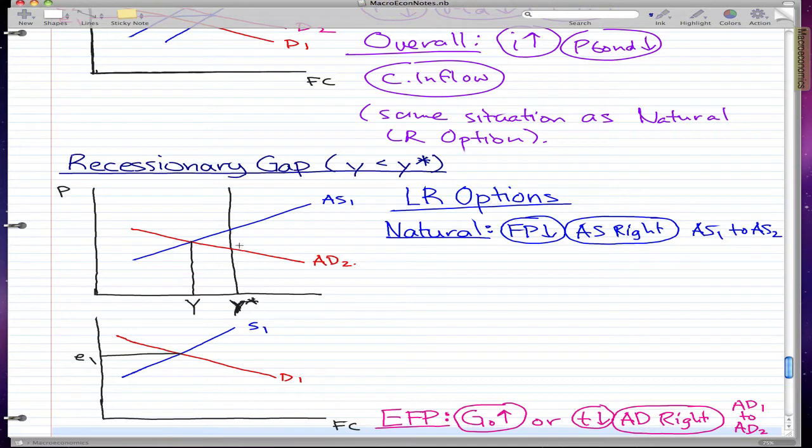So it moves right from AS1 to AS2. When this happens, you can see that our prices fall. When prices fall, MD falls as well as i falls. This was price one, this is price two.